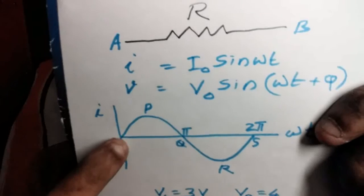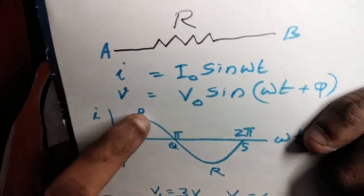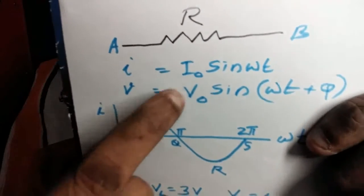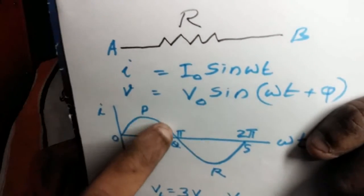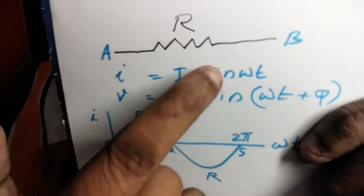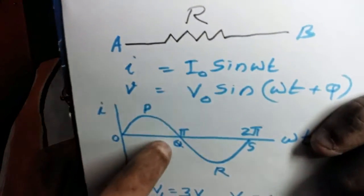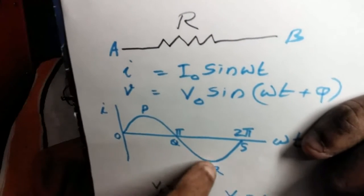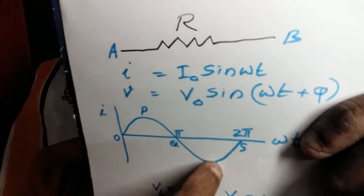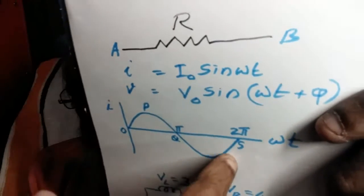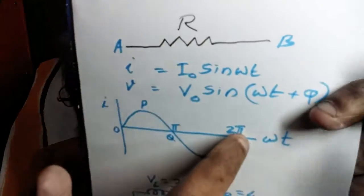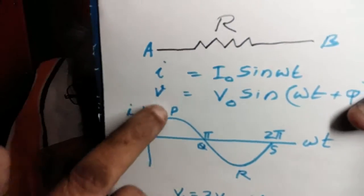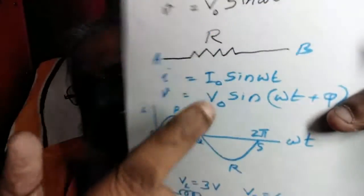Then I equals I₀. This is shown in the graph. The current increases from zero to I₀, the maximum value. Then current decreases to zero. Then the sine function increases in the negative side, reaches a maximum negative value, then again reduces to zero. This will go on repeating. This is sinusoidal AC.